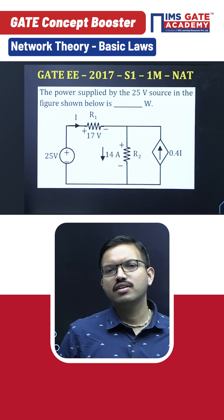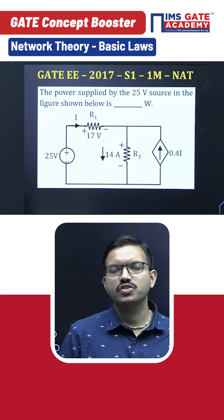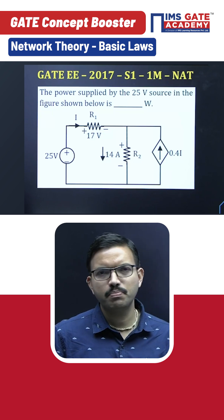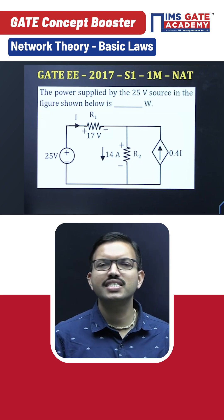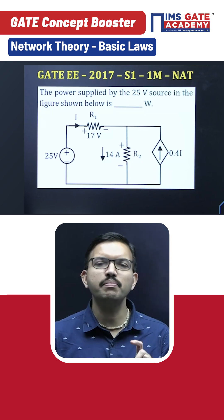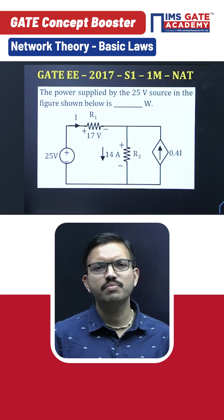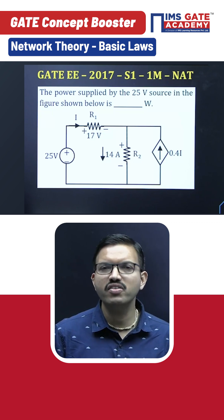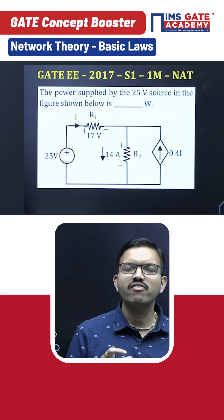If you know the basic laws, then definitely you can easily solve these kinds of questions. See, the basic formula for power across any element is just the product of voltage and current. Voltage across that particular element and current flowing through that particular element - just product of that is nothing but power. In this question, the power delivered by the voltage source, the 25 volt source, they are asking.